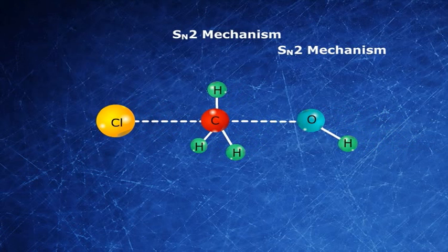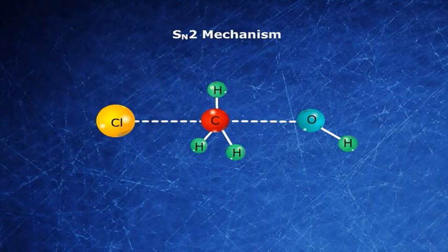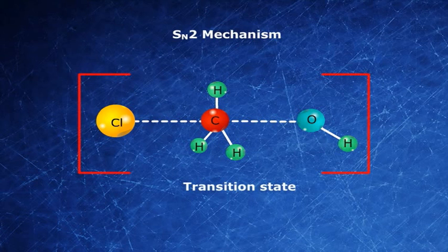The transition state is very unstable. As in this state, carbon is simultaneously bonded to five atoms. Now the carbon-hydroxide bond keeps gaining strength, while the carbon-chlorine bond becomes weaker and weaker.